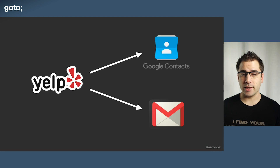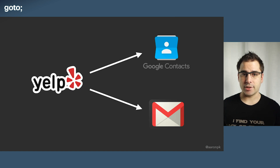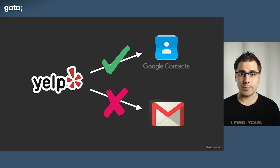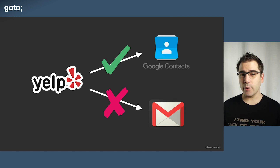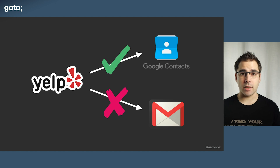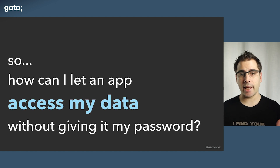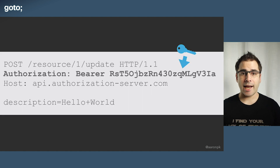So what we're looking for is a solution for how can we let applications access the contacts in their API, but not have it also access the person's emails. And that was the original problem that OAuth set out to solve — how can we let an application access data in an API without giving that application your password?